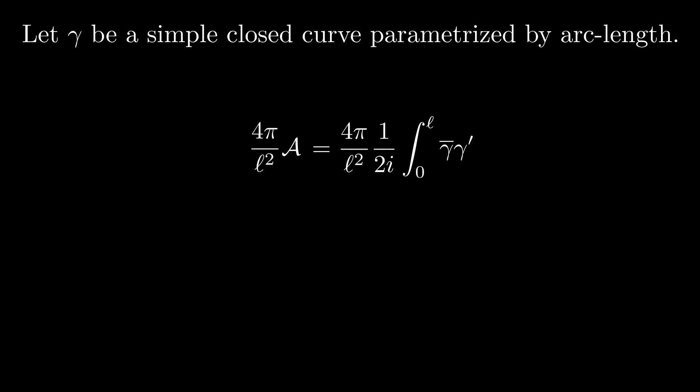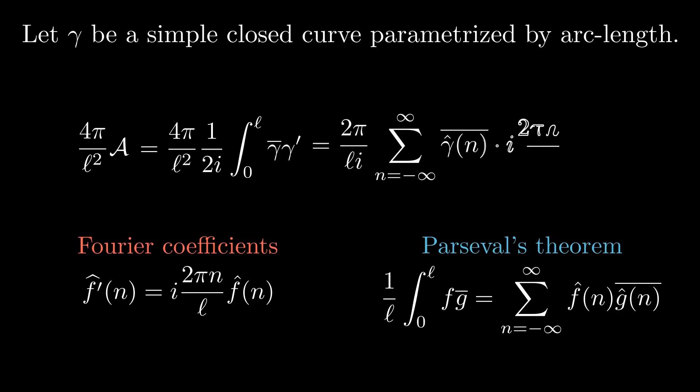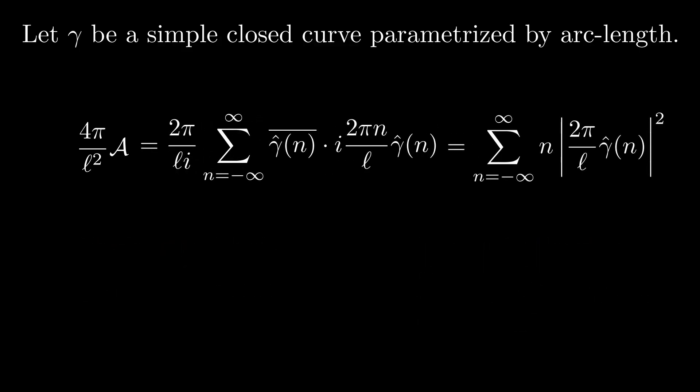Parseval's theorem allows us to compute the formula for the enclosed area. Then, using the formula for the Fourier coefficients along with Parseval's theorem, we turn the integral into a sum. We can simplify this a bit using the absolute value.